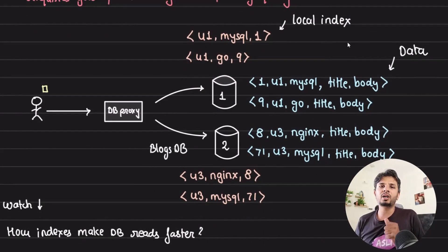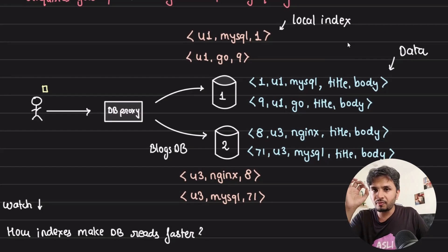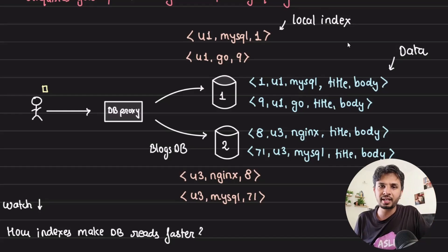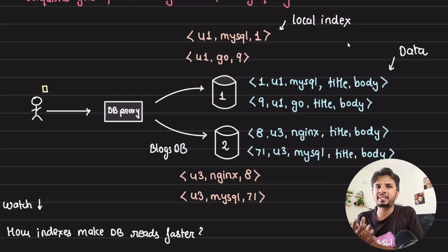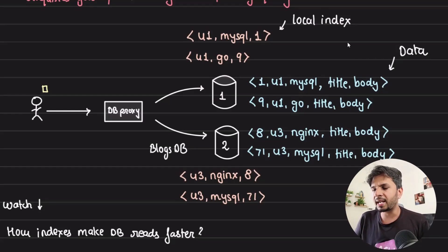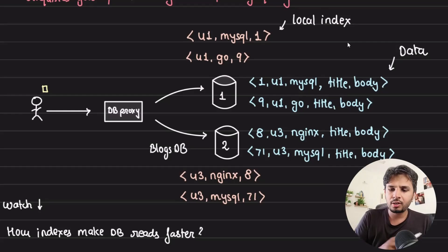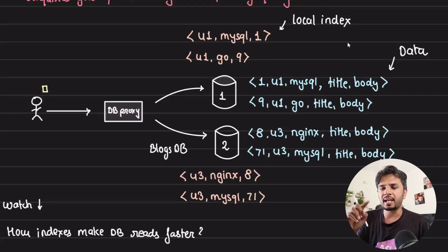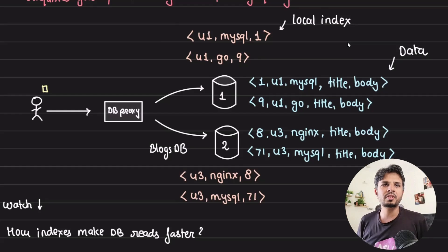Global and local secondary indexes are fundamental concepts in any distributed database — either explicitly exposed to the consumer or implicitly managed internally. Go through the documentation of whichever database you pick. If you're interested in how indexes are created using B+ trees, there's already a video on it linked in the card and description. Prototyping this is a fun exercise. That's all for this one — hope you found it interesting!